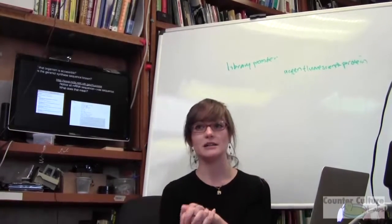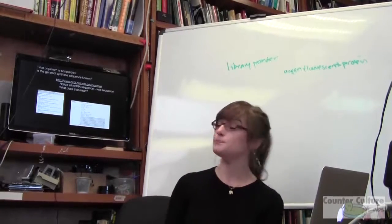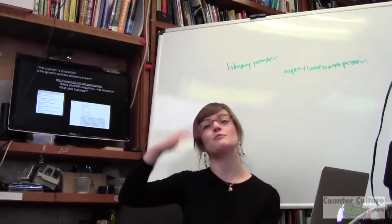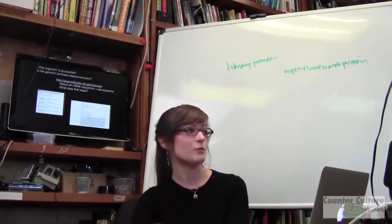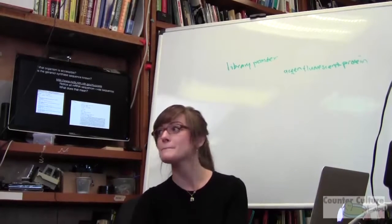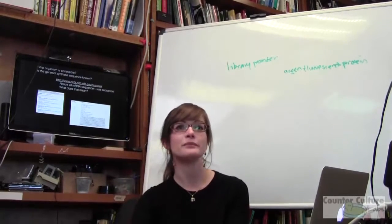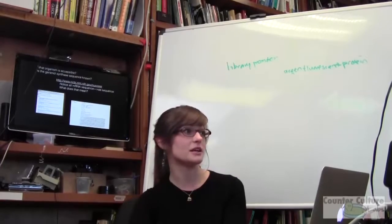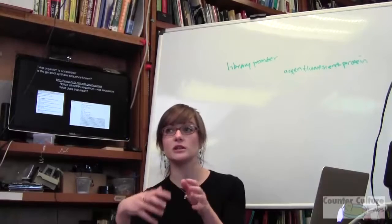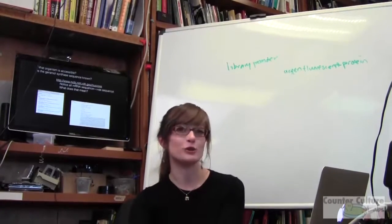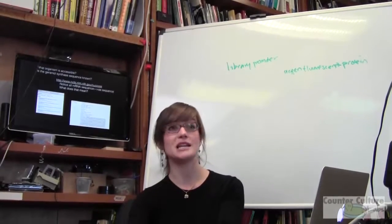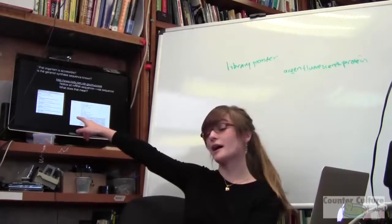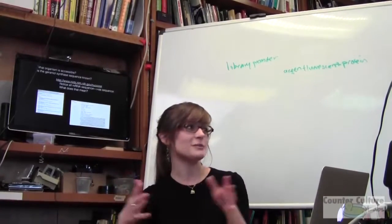If you go to NCBI nucleotide and type in 'geranial synthase perilla frutescens' — which is mint — it just gives you mRNA sequence information, not the genomic DNA. What someone did is isolated the mRNA from the plant — the expressing portion of the genome that leads to the final protein — converted it to cDNA (complementary DNA) to have a stable form, and cloned with it. The mRNA sequence is available so you can backtrack to what the DNA sequence is for that gene.